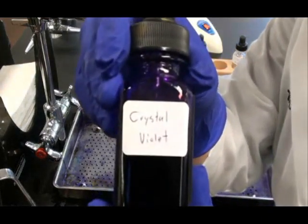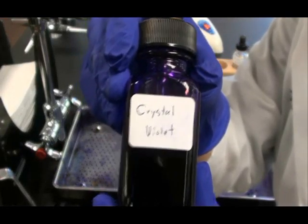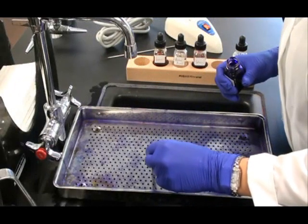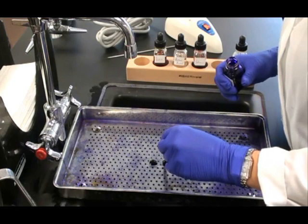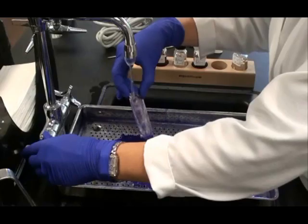So my first step is to apply crystal violet. This is my primary stain. I let drops of crystal violet fall onto all three of the smears on my slide. Then I wait for one minute.